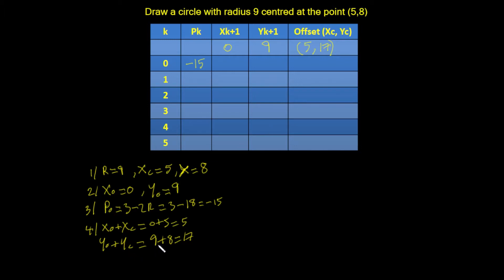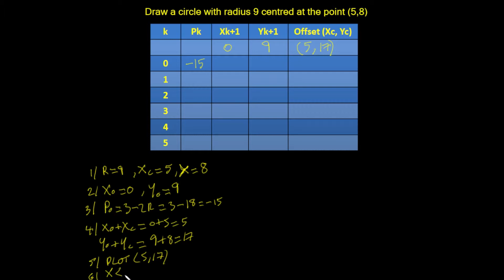Now we can plot the point (5, 17). We test whether x ≥ y to end the algorithm, but here 0 is less than 9, so x < y and we continue.